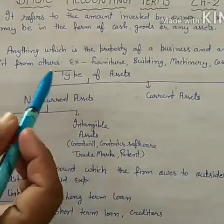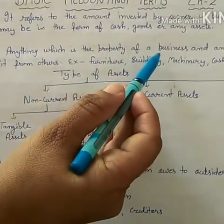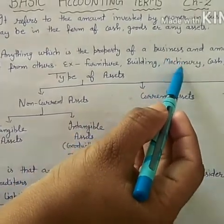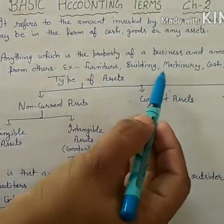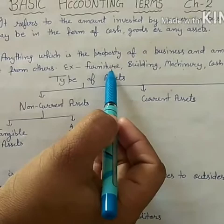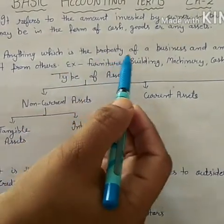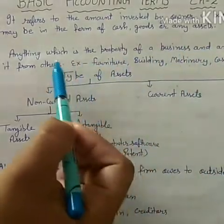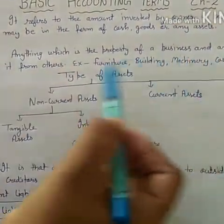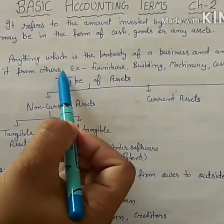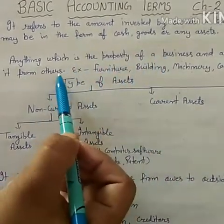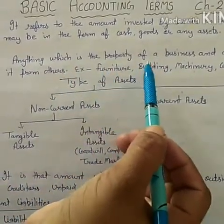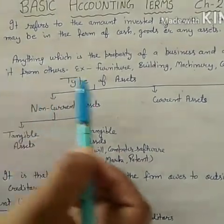The next thing is Assets. Anything which is the property of a business — like machinery, building, furniture — these are known as Assets of any firm. Besides these, any amount due to the business from others is also included in Assets.